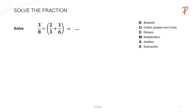I have replaced 1 upon 2 multiplied by 3 upon 4 by 3 upon 8. Now we will solve the second bracket, that is 2 upon 3 plus 1 upon 6. In this example, we have to take the LCM of 3 and 6. The LCM of 3 and 6 is 6, so we need to make both fractions have a denominator of 6.